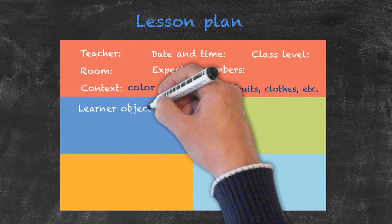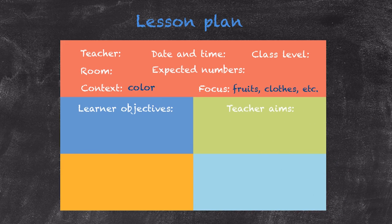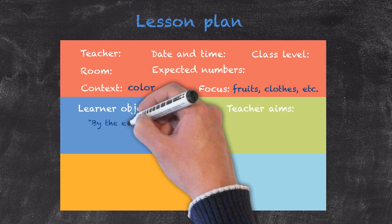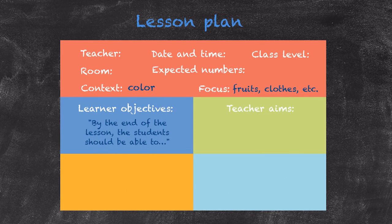Then we have a set of objectives and aims. The learner objectives relate to what we're hoping the students are going to be able to do by the end of your lesson. A useful way of writing out the objectives is to start the sentence: 'By the end of the lesson the students should be able to,' followed by a list of two, three, or four items we're expecting the students to be able to do.